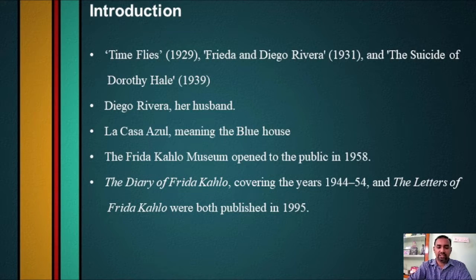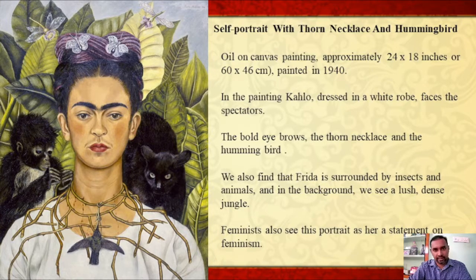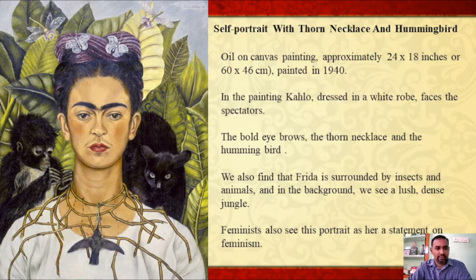Now let's move to a discussion of the painting, titled Self-Portrait with Thorn Necklace and Hummingbird. As the very title suggests, this painting is a self-portrait of Kahlo. Out of the 143 paintings she created, 55 were self-portraits, and harsh life experiences were a common theme in them. In most of her self-portraits, Frida depicted her physical and emotional pain associated with the accident and her troubled relationship with her husband Diego Rivera. Of all the self-portraits, this is her most popular and celebrated one. This oil on canvas painting is rather small — around 25 by 18 inches or 60 by 46 centimeters — and was painted in 1940.